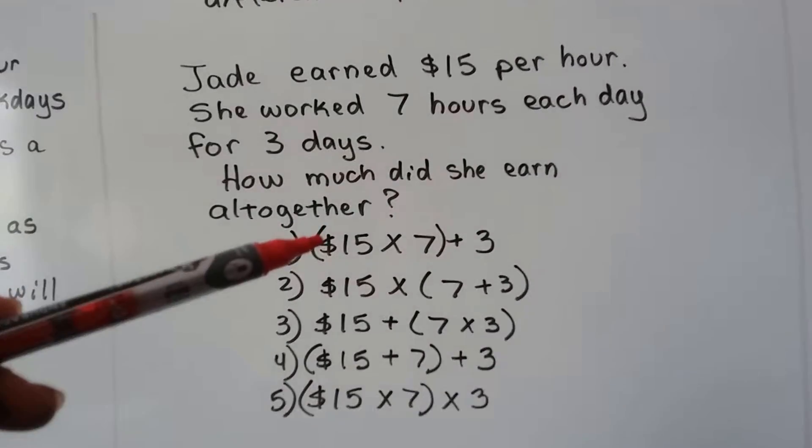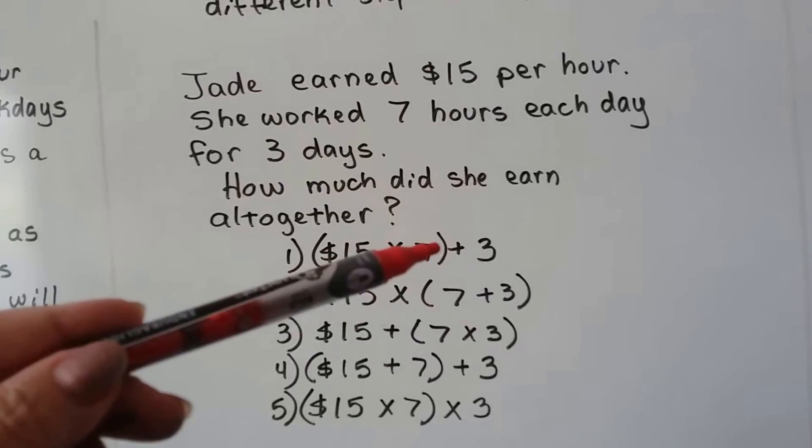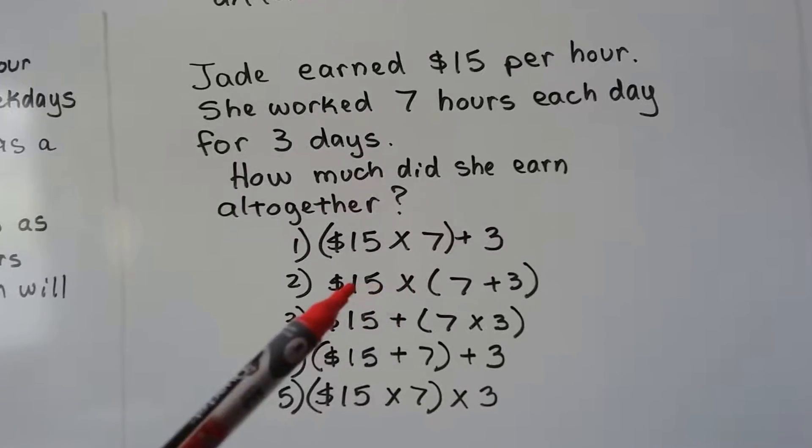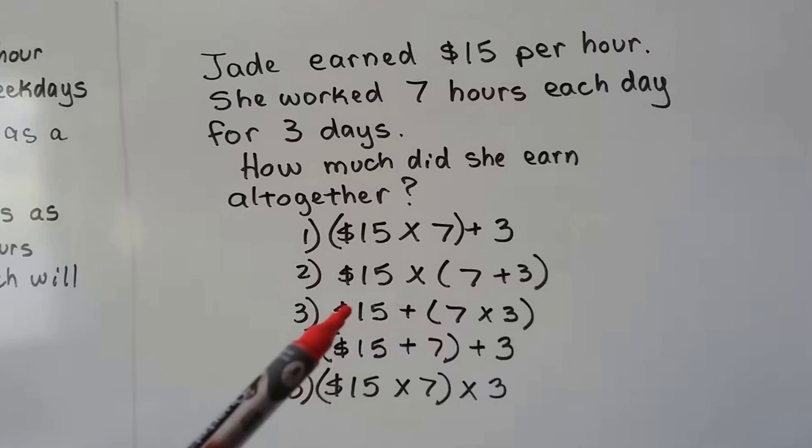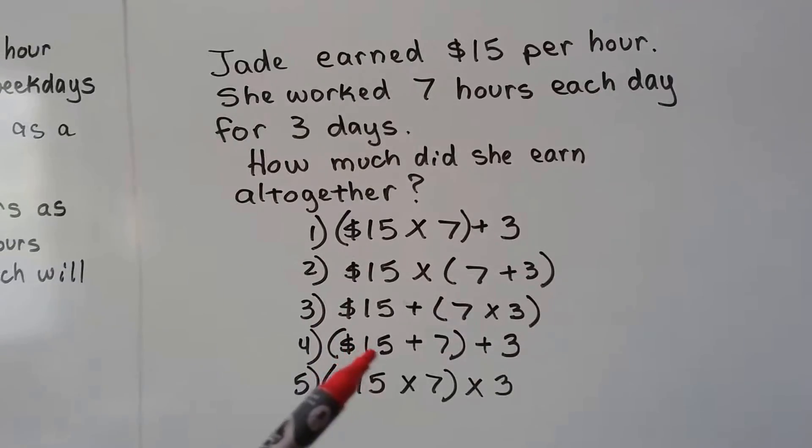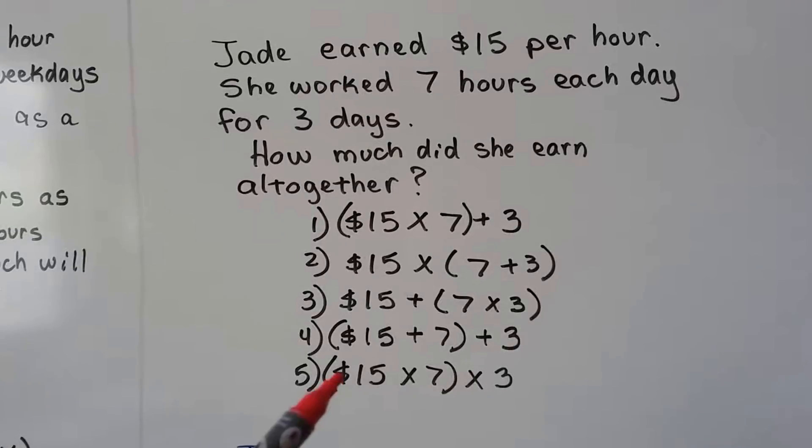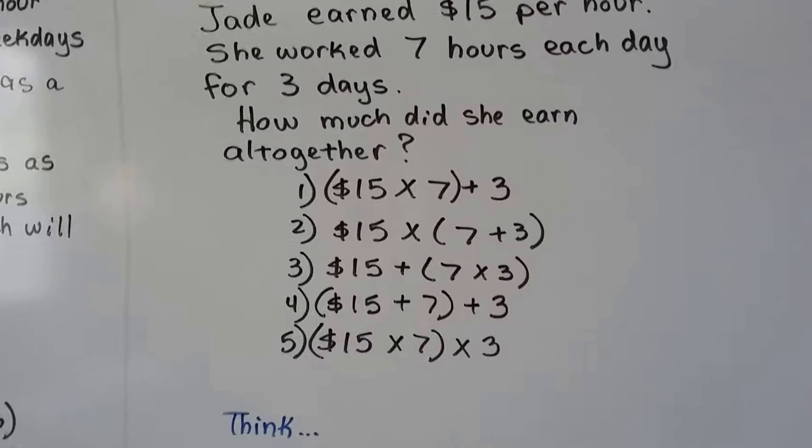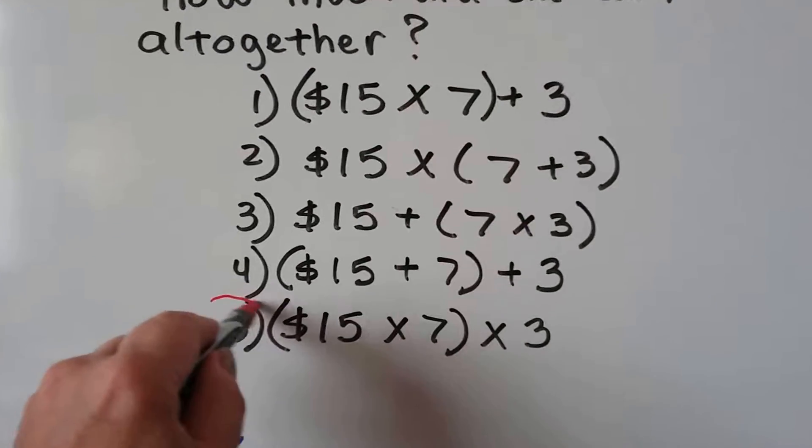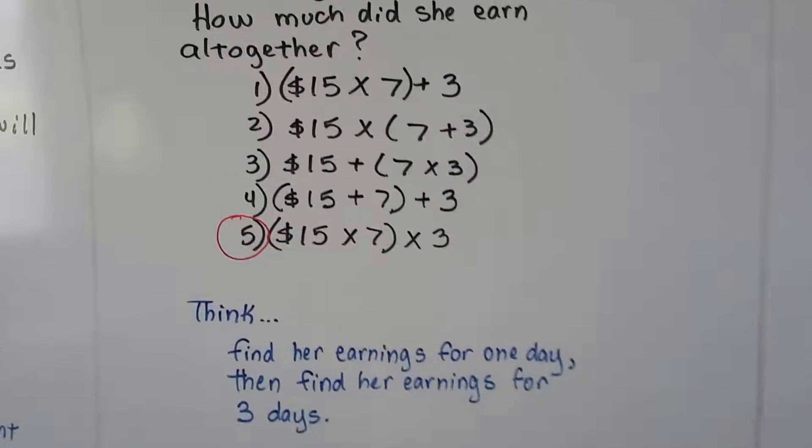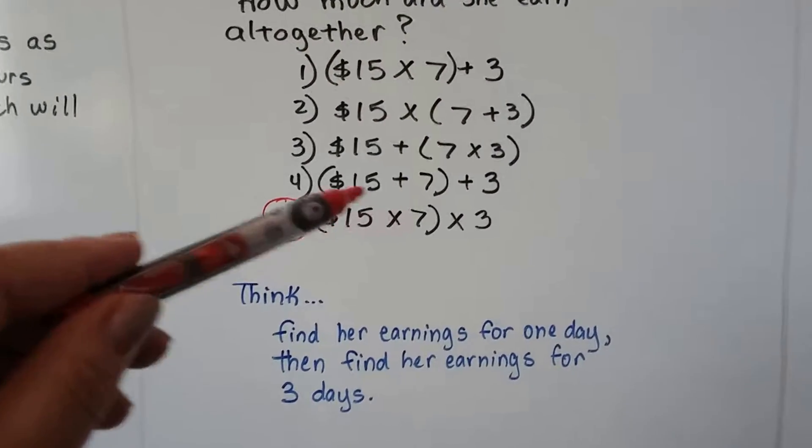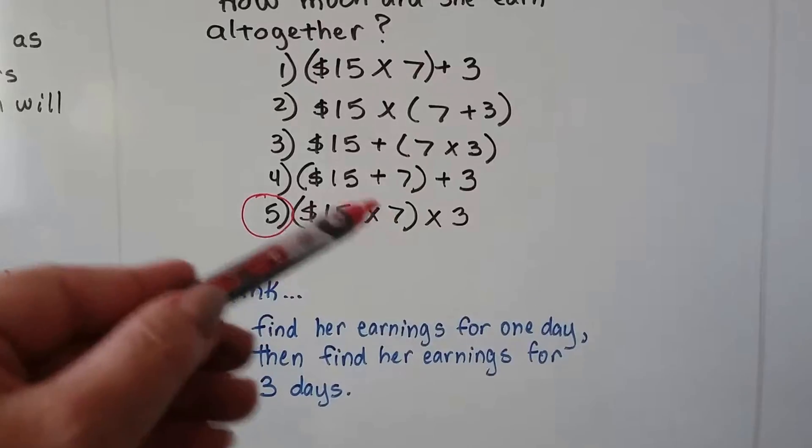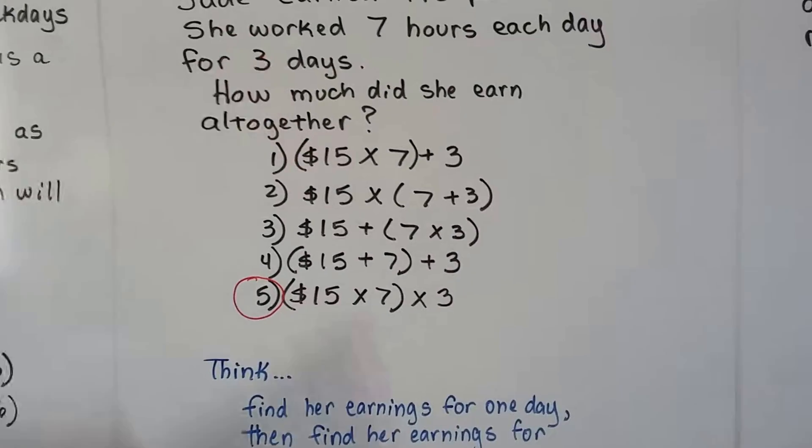Would we do the $15 per hour times seven hours and then add a three for the three days? Would we add the seven plus three and multiply it by the $15 per hour? Would we multiply the seven times three and then add $15? Or would we do the 15 plus seven and then add three? Or how about this one? $15 per hour times seven times three? Well, this is the actual correct answer right here. We need to find her earnings for one day. That would be the $15 times the seven hours and then find her earnings for three days. Once we had found how much she made in one day, we can multiply it by the three days she worked.